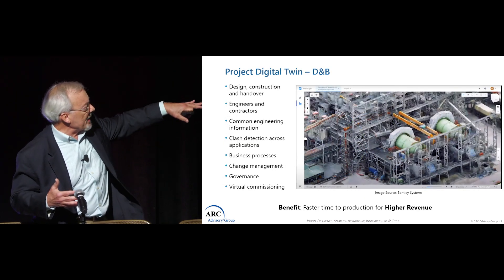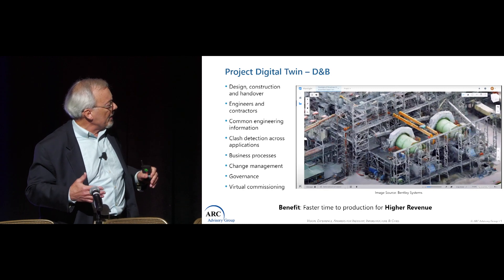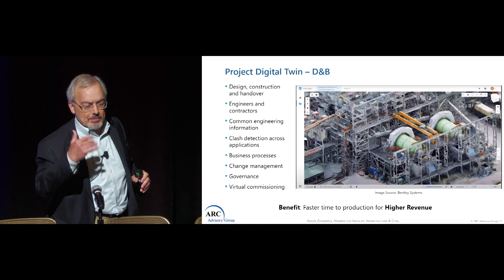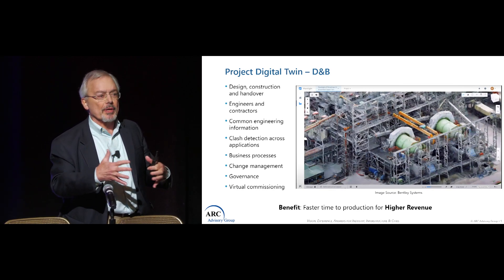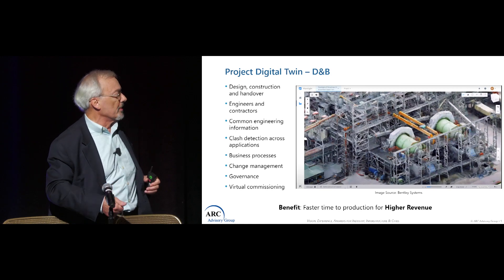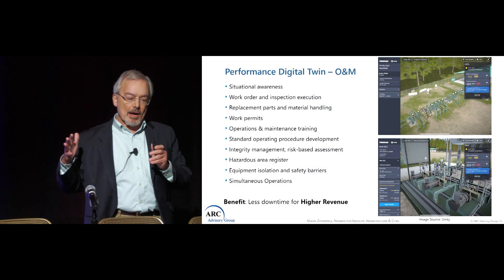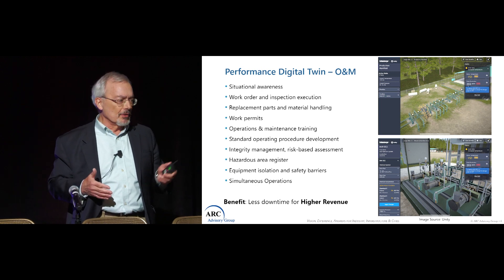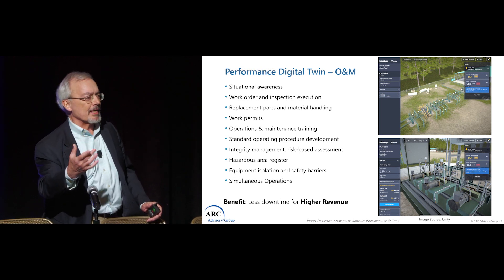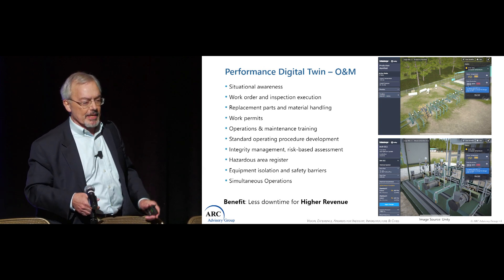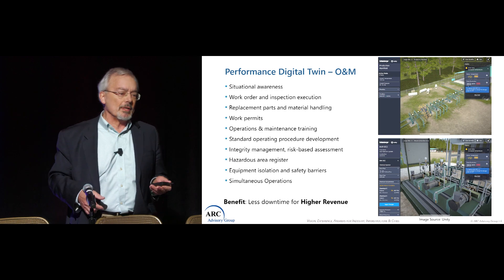To give a couple of examples: on the left you'll see a list of digital twin use cases, and there's a screenshot from Bentley Systems' plant site. The key benefit is that with the digital twin, the plant comes online sooner and you get higher revenue. For operate and maintain, we have screenshots from Unity — operating data and data about equipment relevant to operation and maintenance, with a list of use cases showing what we mean by a digital twin in that context.